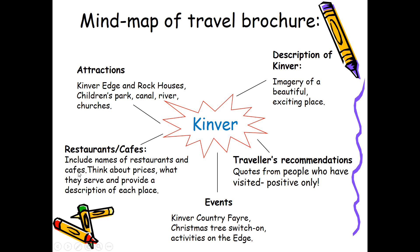Include restaurants and cafes — include their actual names. Don't forget places like the White Hart pub as well. Think about the prices — you may or may not know them, you could look online, or if you want you can make them up. What they serve — again you could look at their menus online — and a bit of a description of each place.